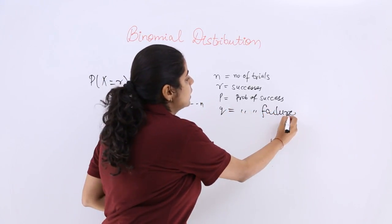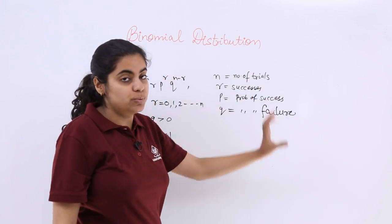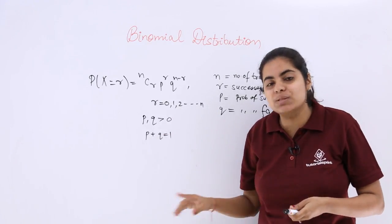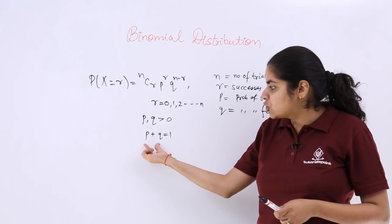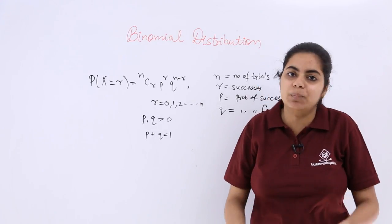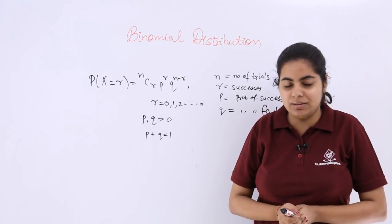This is regarding the binomial distribution. We'll be using this formula a lot because many questions can be solved with ease using it. We must ensure that the probability of success and failure both add up to 1, because probability cannot be greater than 1.